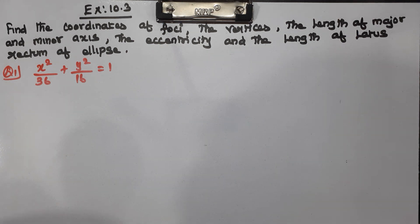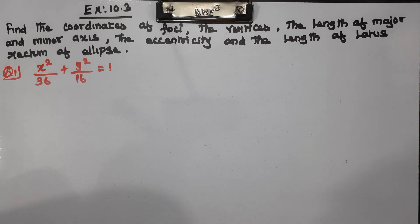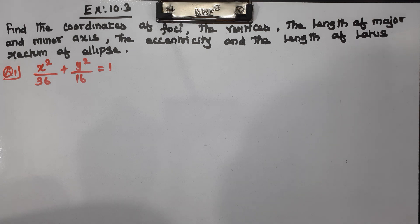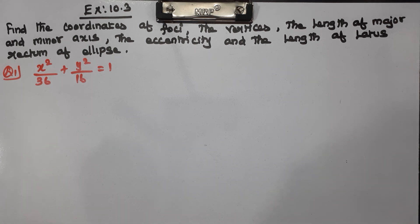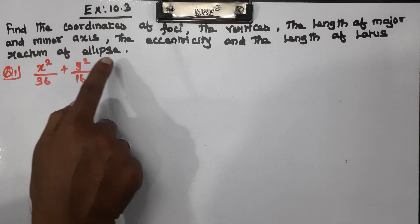Eccentricity — what formula? e equals c by a. The c value is the square root of a squared minus b squared. This is the length of latus rectum formula: 2b² by a.